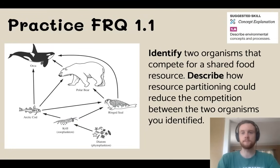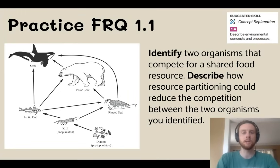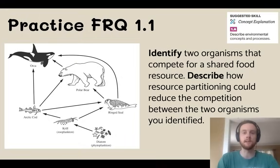Our practice FRQ for topic 1.1 today will cover the skill of describing an environmental concept and process. Look at this food web and identify two organisms that would compete for a shared food resource. After you've identified them, describe how resource partitioning could reduce the competition between the two organisms you identified.